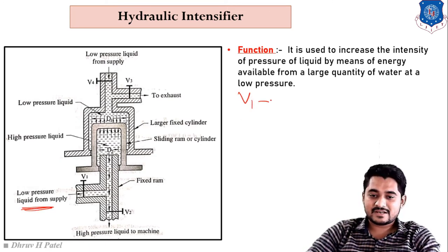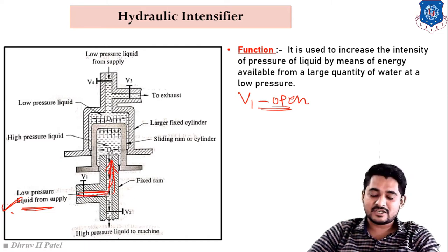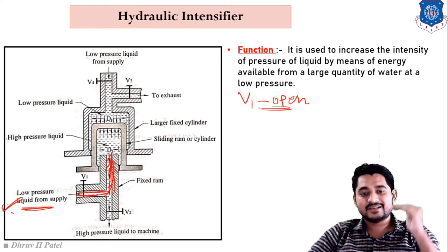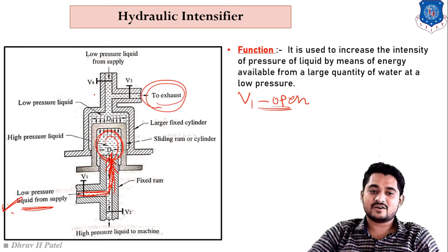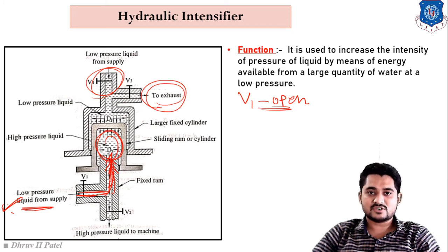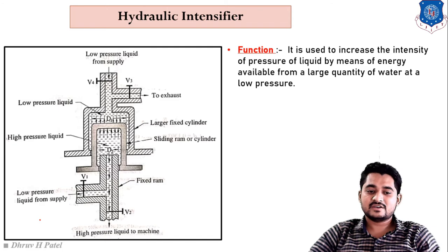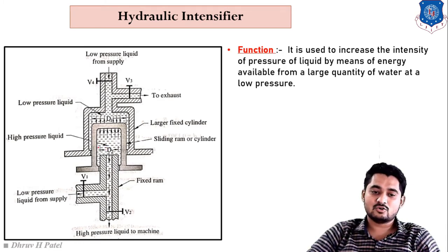First, V1 valve is opened while V2, V3, and V4 are closed. Low-pressure liquid from the supply flows into the sliding ram section, causing the sliding ram to move slowly in the upward direction. Low-pressure liquid is stored in the sliding ram section during this step.